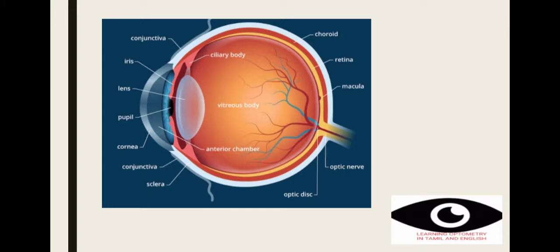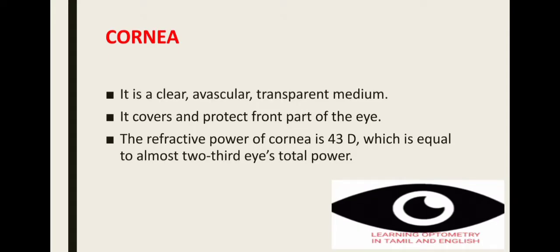Our first part is the cornea. Cornea is a clear, avascular, transparent medium. Avascular means it has no blood vessels, that's why it is called avascular. Transparent medium means a medium which allows light rays to pass through it. Cornea allows light rays to pass into our eye, so it is called a transparent medium.